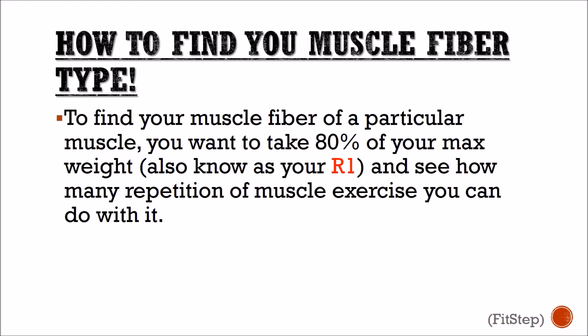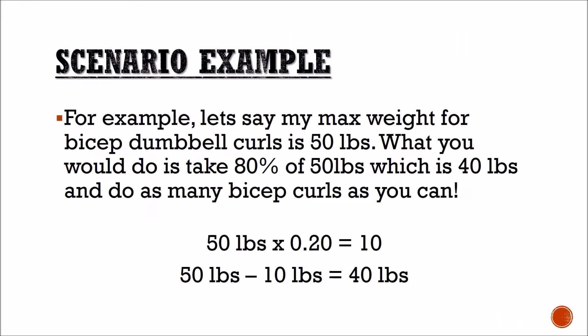One interesting thing is that there is a way to find your muscle type with just a couple of simple calculations. What you would do is look for your max weight, find what 80% of your max weight is — also known as your R1 — and see how many reps you can do. Based on the number of reps you can do with your R1, you can determine what specific muscle fiber group you are using.